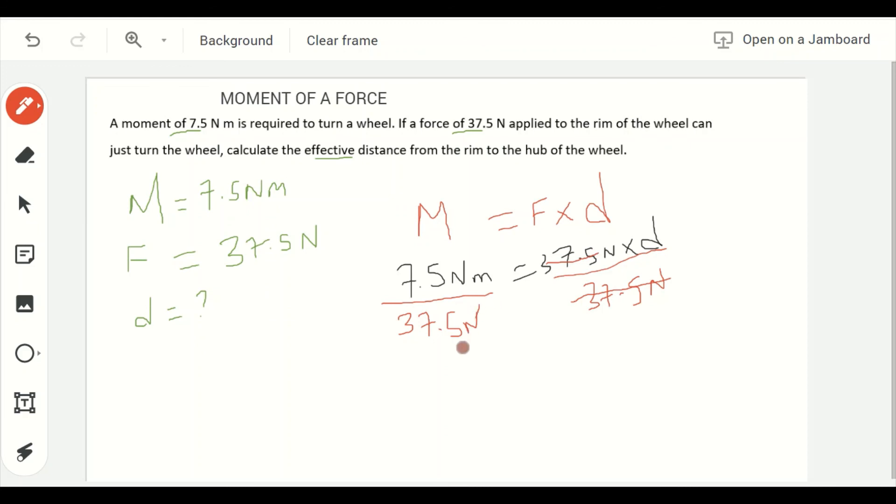So I am left with 7.5 meters divided by 37.5. What is 7.5 divided by 37.5? That gives me 0.2 meters.